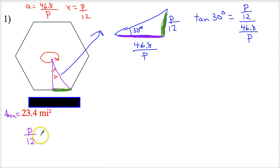P divided by 12 divided by 46.8 over P really means keep the first fraction, flip the second one, change it. So I'm going to get to multiply. So I end up with P squared is equal to 46.8 times 12. So I'll stack all this back up here and say tangent of 30 degrees is equal to P squared over 561.6.